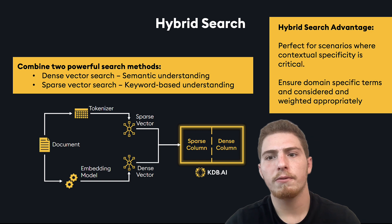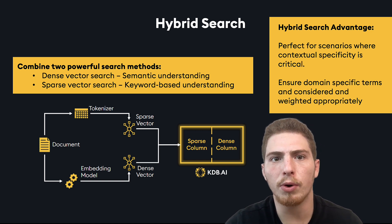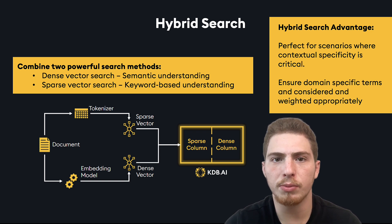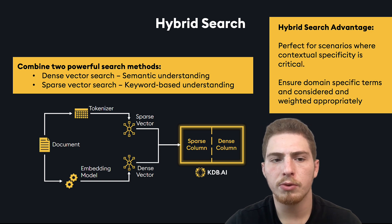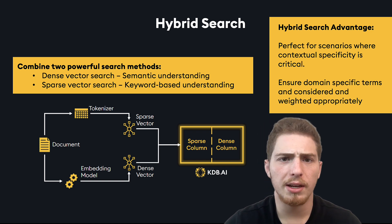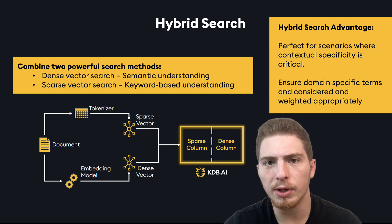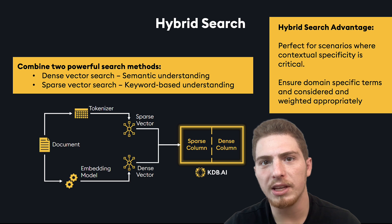This has all kinds of advantages. It's perfect for situations where contextual specificity is extremely important — where we're searching for specific keywords but still want some of the performance improvements of semantic search. It's also useful when we haven't had the chance to fine-tune an embedding model on our specific data. In those cases, keyword search performs well, but keyword search mixed with semantic search can perform even better.